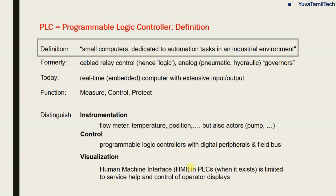PLC is a small computer. It functions with input devices, output devices, and memory. These are small computers dedicated to automation tasks in an industrial environment. In industrial applications, there is flow measurement, temperature measurement, and speed measurement — all input devices measured.